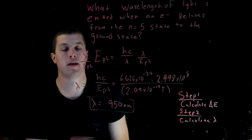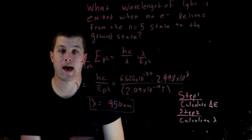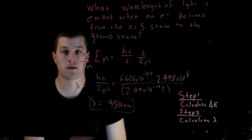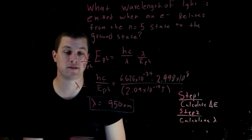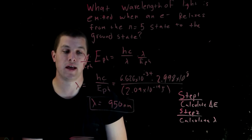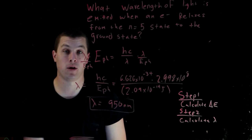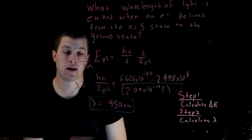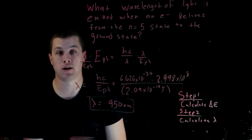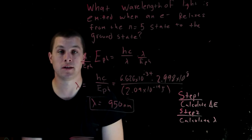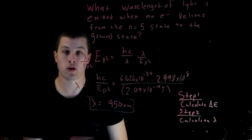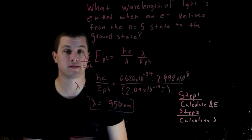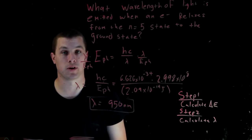So if an electron relaxes from the n equals 5 state to the ground state, it puts off a photon at about 950 nanometers — that's barely in the infrared. Now let's take a look at one more process. This is going to be an absorption process.